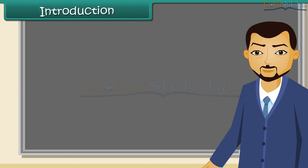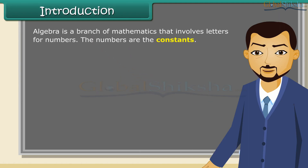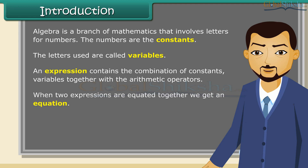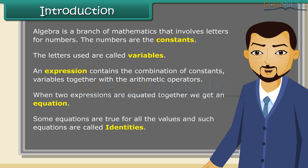Algebra is a branch of mathematics that involves letters for numbers. The numbers are the constants. The letters used are called variables. An expression contains the combination of constants and variables together with the arithmetic operators. When two expressions are equated together, we get an equation. Some equations are true for all the values, and such equations are called identities.